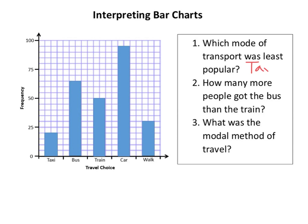Now it doesn't ask us how many — we might need that for the second question. How many more people got the bus than the train? So the bus is this one and there's the train. We're looking at three squares different. Now I've got to work out how much a square is — it goes 5, 10, 15, 20, 25. So five squares makes 25, meaning one square is 5, and three squares is therefore 15.